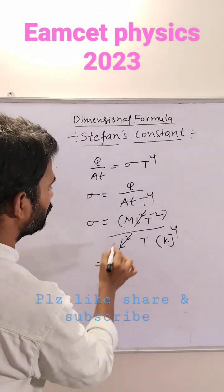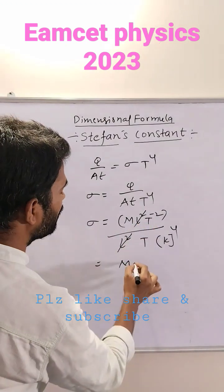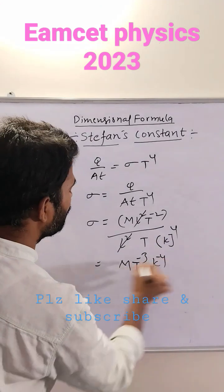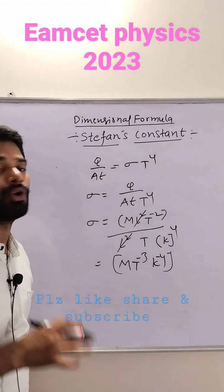L squared cancel out. M dimension formula, T to the power minus 2, T to the power minus 1, M T to the power minus 3, K to the power minus 4. M T to the power minus 3 K to the power minus 4.